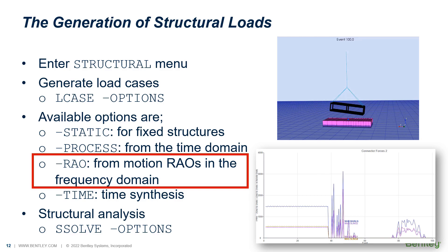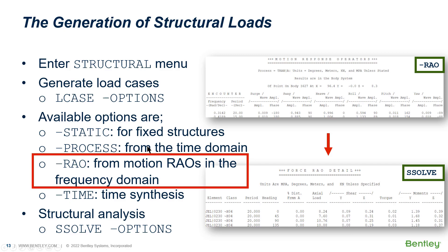The next option is for structural analysis in the frequency domain. This is different from those two types of load cases. For load cases from those two options, we have final internal forces and deflections for member and connection check. However, what you have at the end of the structural analysis in the frequency domain is the response amplitude operators of internal forces and deflections for unit wave height. We cannot use these RAOs directly for code check, so we need to take additional steps to obtain final results. This is done during the post-processing stage, which will be introduced later in this presentation.